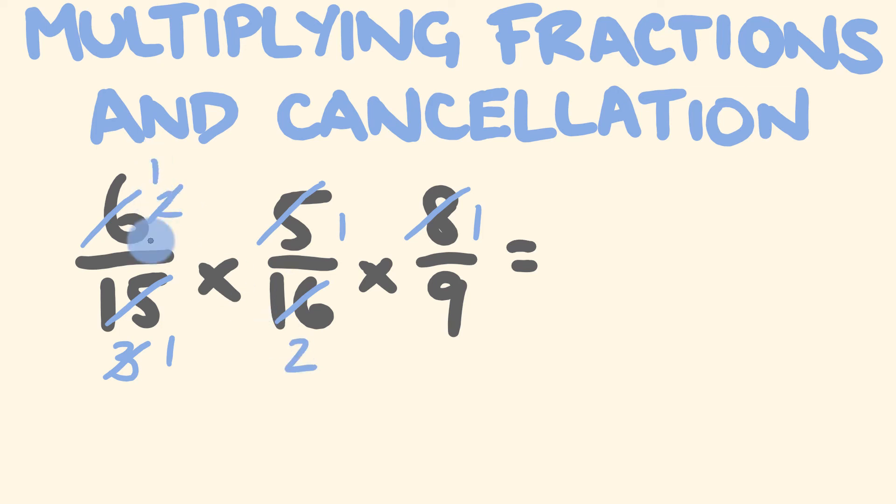So 2 goes into both of those. 2 divided by 2 is 1. 2 divided by 2 is 1. I don't think we can do any more. No we can't. So let's just multiply this out now. 1 times 1 times 1 is 1. 1 times 1 times 9 is 9. There's our answer 1 over 9.